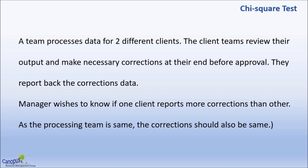Now, how is this different from a two-proportions test? Firstly, this is also discrete data, but here we are dealing with count data. In the case of proportions, we had percentages being compared — for example, 5% and 95%. Here we are not talking about proportions; we are talking about the absolute count of the data.